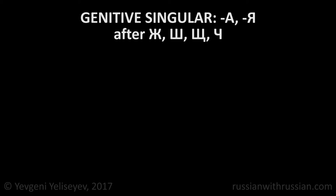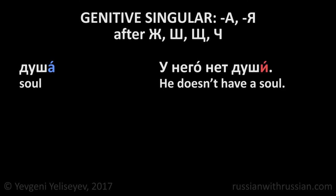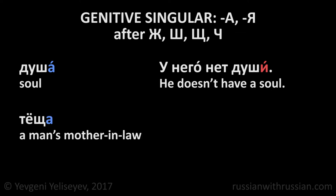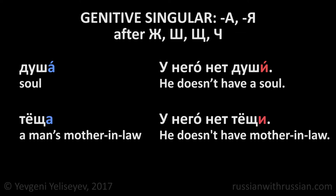After hushing consonants Ж, Ш, Щ, Ч: Душа — soul. У него нет души. He doesn't have a soul. Тёща — a man's mother-in-law. У него нет тёщи. He doesn't have a mother-in-law.